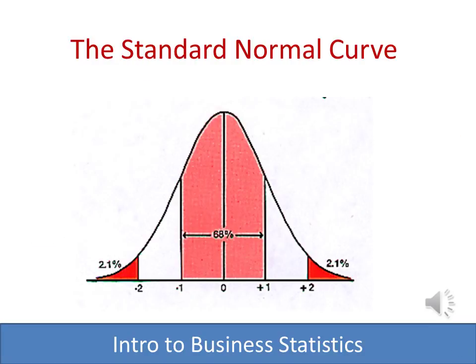We're going to translate the empirical rule into something called the standard normal curve. When working with standard deviations and means, tracking values can get confusing — for instance, if the mean is 95 and the standard deviation is 3, how many standard deviations from the mean is a value of 97? We convert the actual value relative to the mean into how many standard deviations it is using a simple formula, and there's a simple formula we'll use to do that.